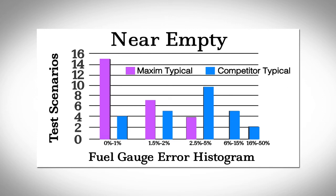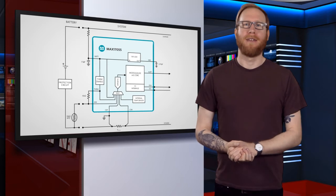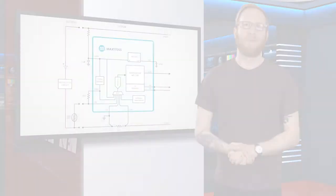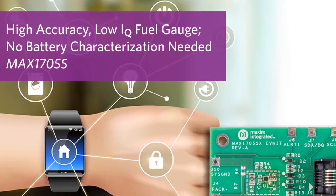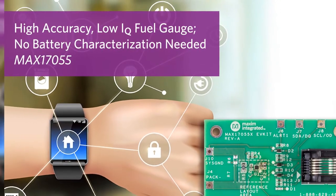Low error near-empty assures optimum utilization of the battery charge, maximizing run time and minimizing unexpected or premature interruption of device operation. The ModelGauge M5EZ algorithm embedded in the MAX17055 is a disruptive approach that makes battery system development faster, easier, and more cost effective.